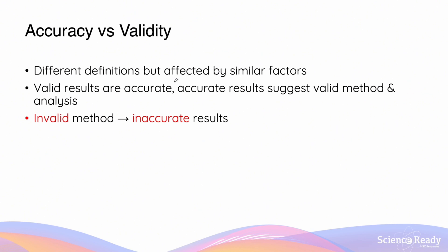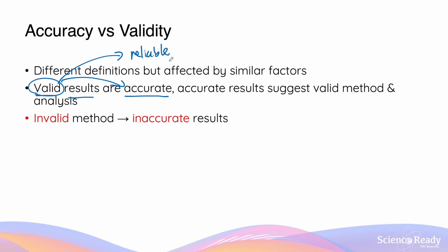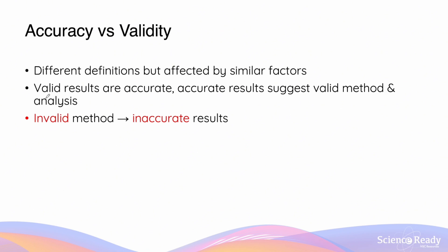Students are often confused between accuracy and validity because, despite having different definitions, they are affected by similar factors. Validity refers to how well your experiment and procedure addresses the aim and hypothesis, whereas accuracy refers to how close your experimental values are to the theoretical values. The two are closely related: valid results usually suggest accuracy, and valid results also imply that results are reliable.